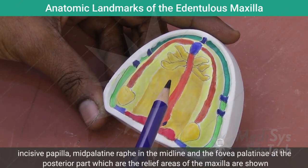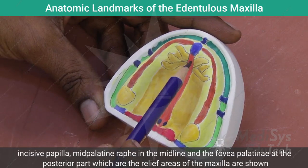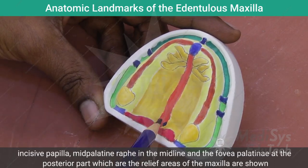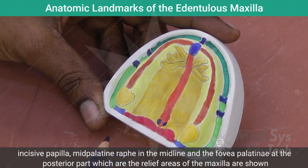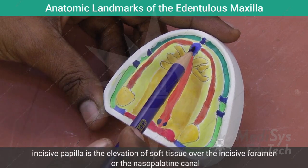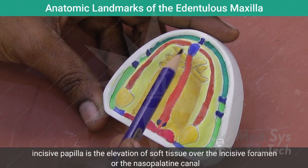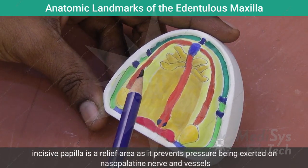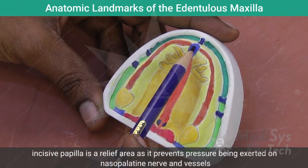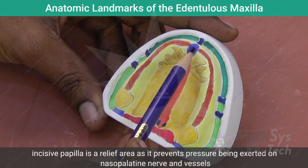The relief areas of the maxilla include the incisive papilla in the anterior region, the mid-palatine raphae in the midline, and the fovea palatina at the posterior part. The incisive papilla is an elevation of soft tissue over the incisive foramen or the nasopalatine canal. It is a relief area as it prevents pressure being exerted on the nasopalatine nerve and vessels.